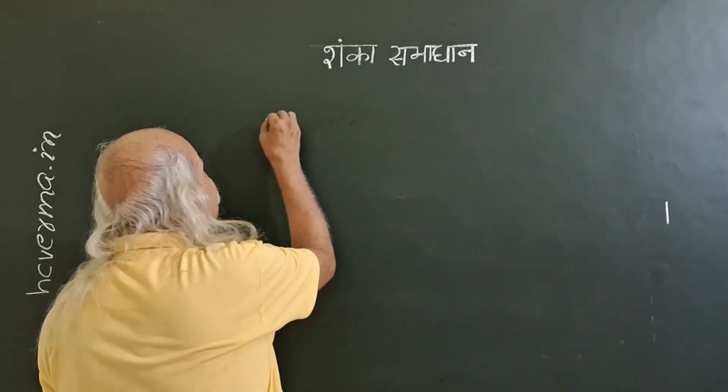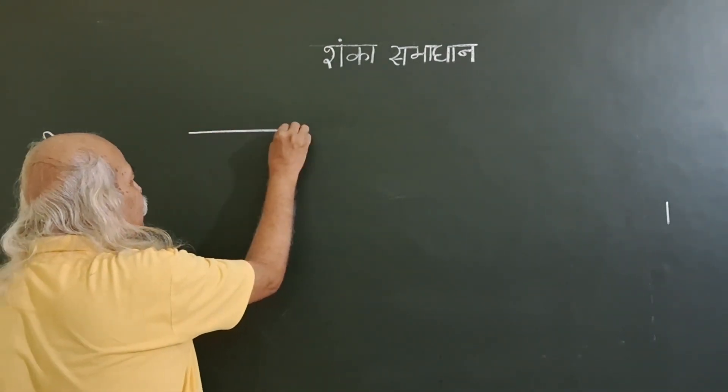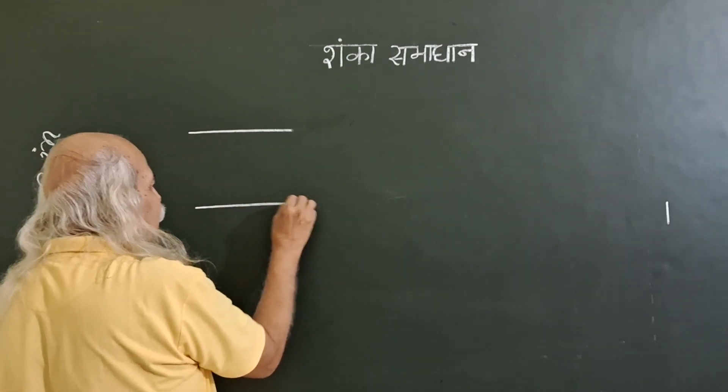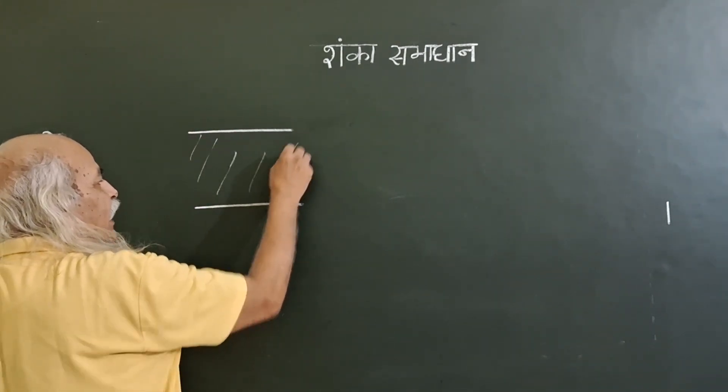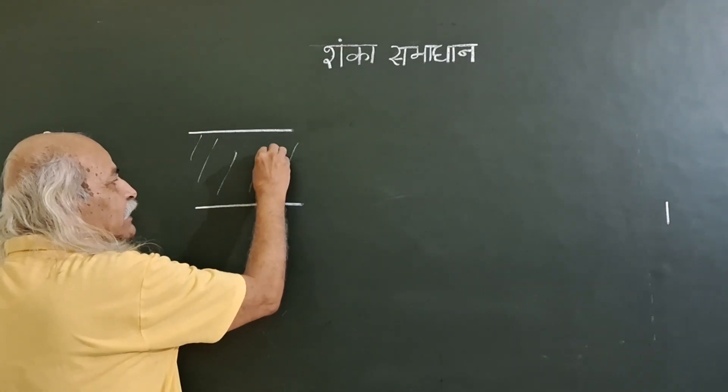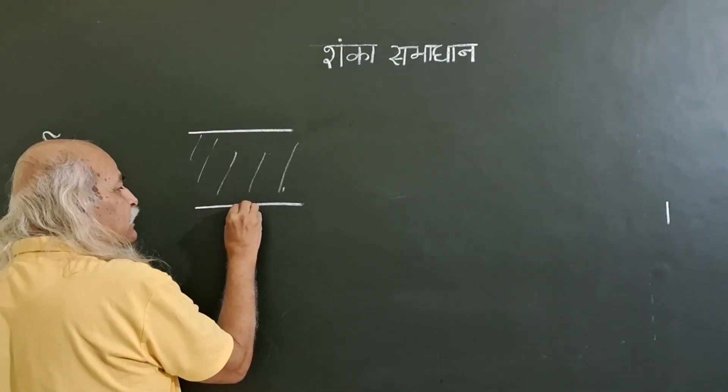So let us say we have this plate here and one plate here, two capacitor plates, and in this you have this dielectric.